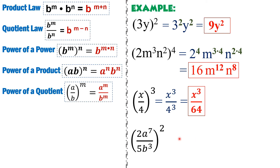Another example: 2a raised to 7 over 5b cubed, all raised to 2. Since everything inside the parentheses is raised to 2, each factor gets the exponent 2. For a raised to 7, since it already has an exponent, we multiply 7 and 2 — giving a raised to 14.